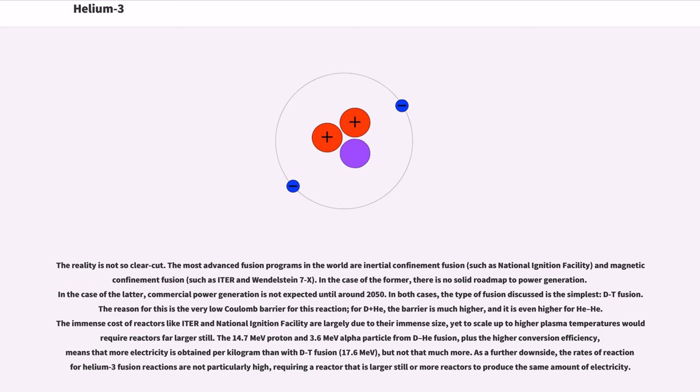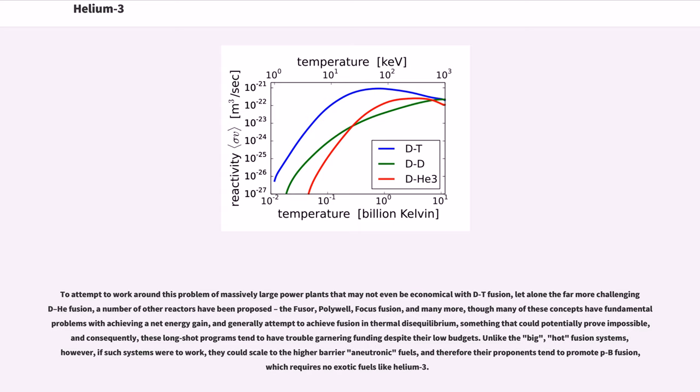The 14.7 MeV proton and 3.6 MeV alpha particle from D-He3 fusion, plus the higher conversion efficiency, means that more electricity is obtained per kilogram than with D-T fusion, 17.6 MeV, but not that much more. As a further downside, the rates of reaction for helium-3 fusion reactions are not particularly high, requiring a reactor that is larger still or more reactors to produce the same amount of electricity. To attempt to work around this problem of massively large power plants that may not even be economical with D-T fusion, let alone the far more challenging D-He3 fusion, a number of other reactors have been proposed: the Fusor, Polywell, Focus Fusion, and many more.